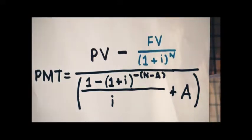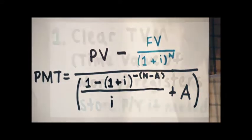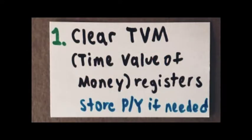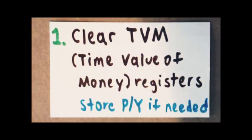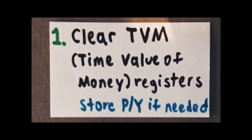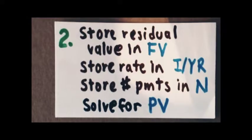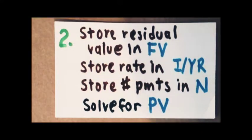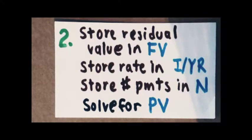We're going to use a technique with your typical finance calculator to solve for payment. The first step is to clear the time value of money registers, and if necessary, store the number of payments per year in P/Y — normally this is going to be 12. Then we're going to use time value of money calculations: store the residual value in FV, and store the interest rate in I/Y or I/YR.